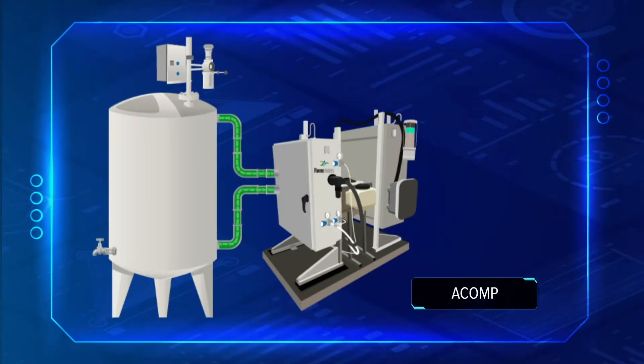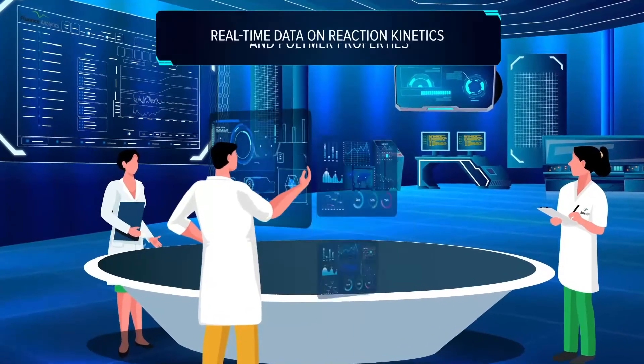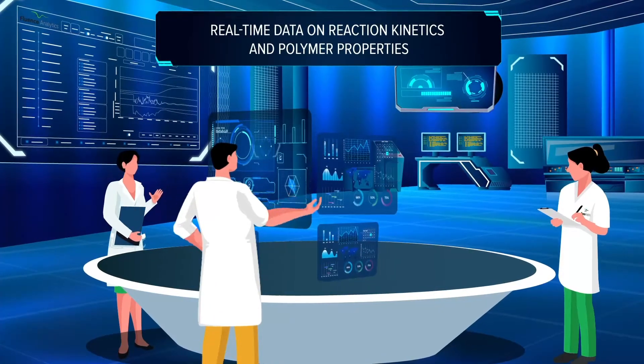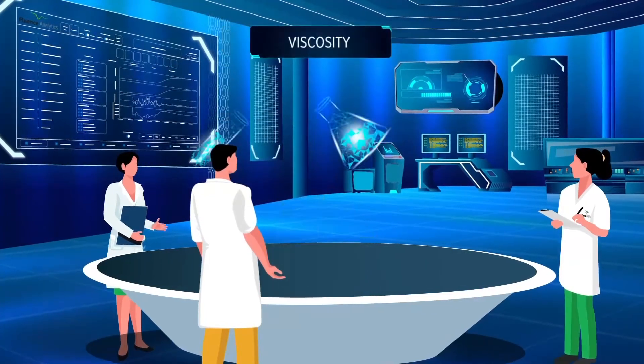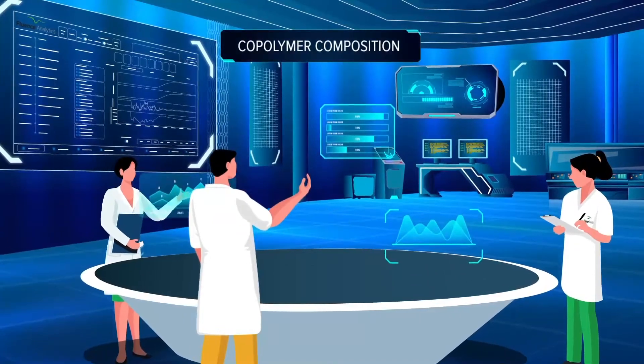ACOMP is integrated into a plant's control system to reveal real-time data on reaction kinetics and polymer properties, including molecular weight, viscosity, monomer conversion, residual monomers, and copolymer composition.